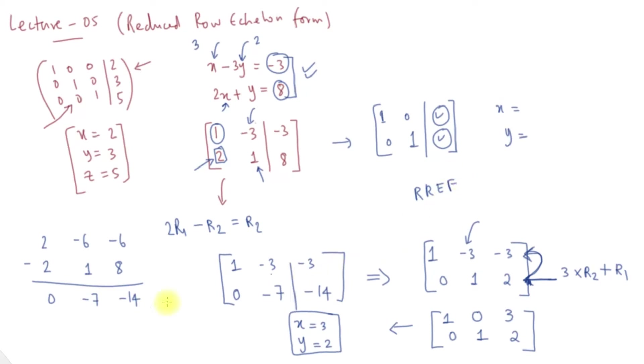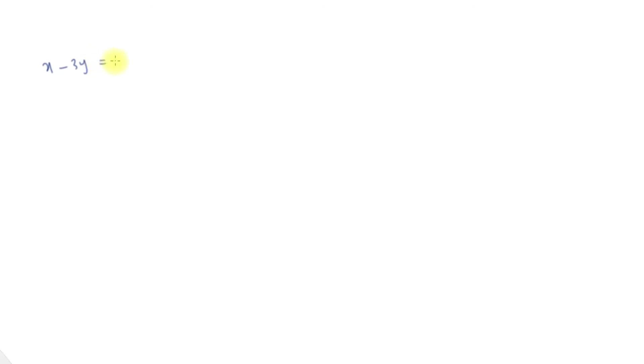For example, consider the case where the equations are x minus 3y is equal to minus 3 and x minus 3y is equal to 3. These two equations represent parallel lines.